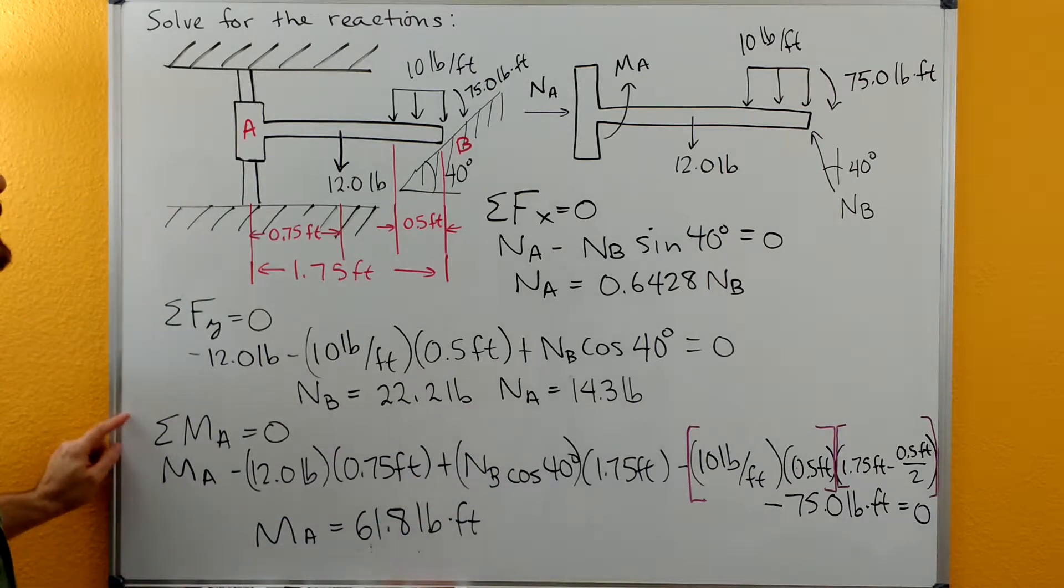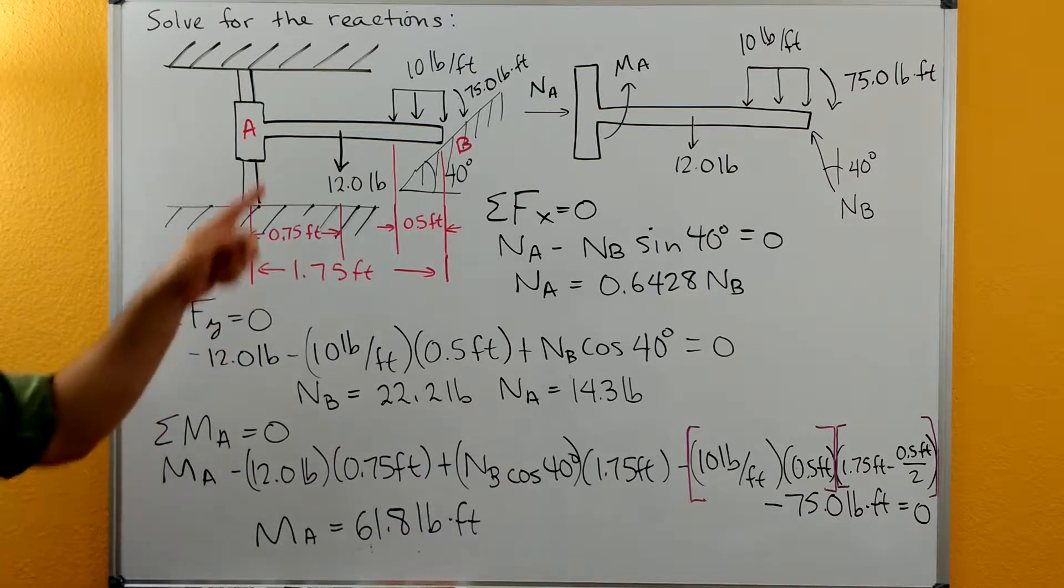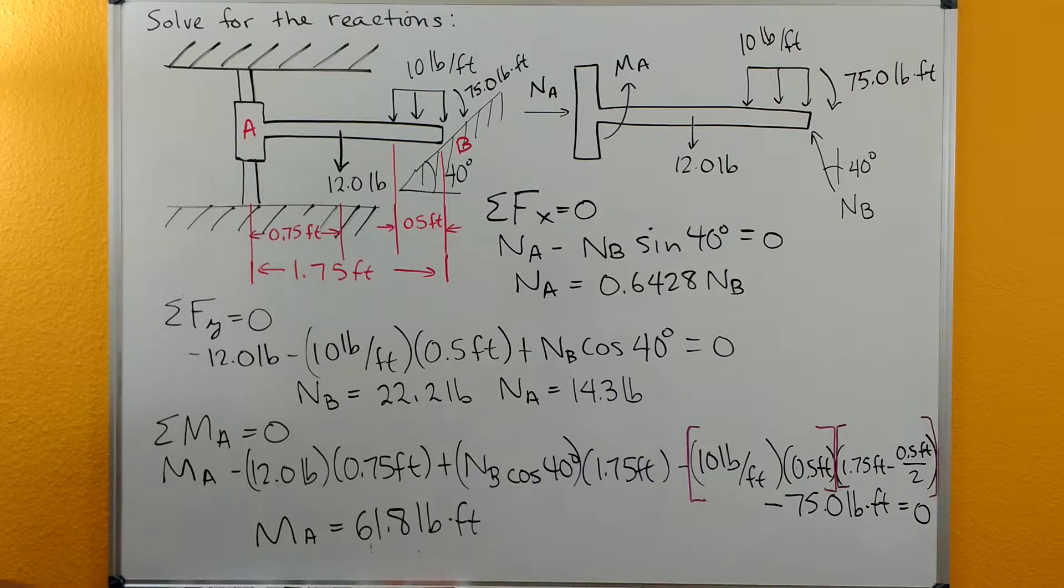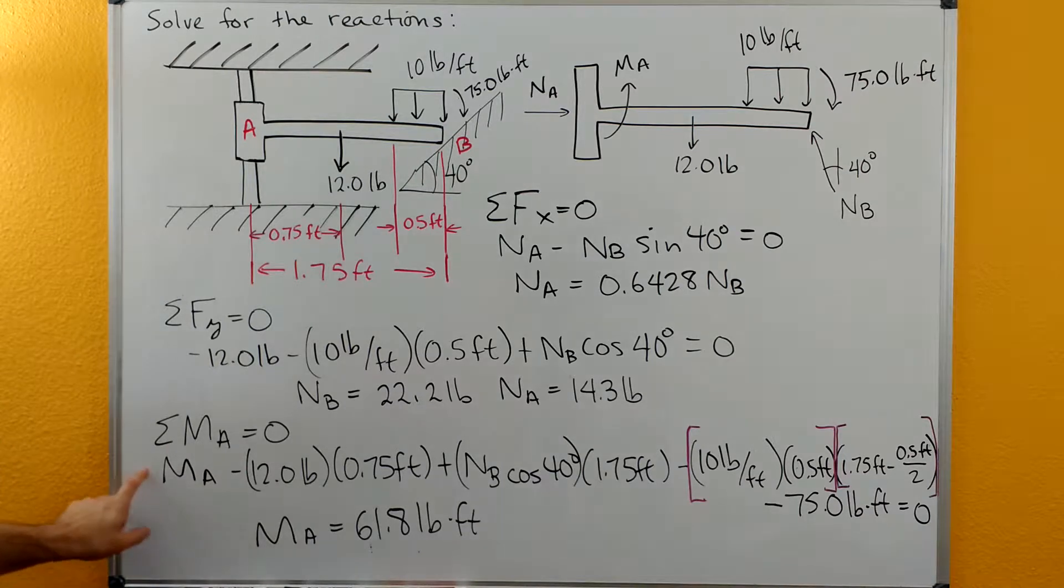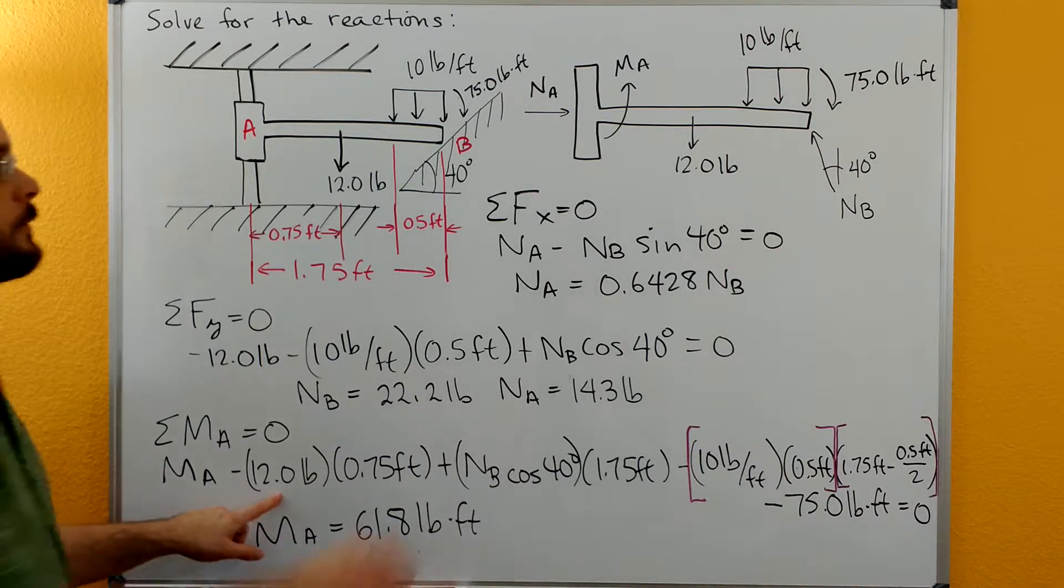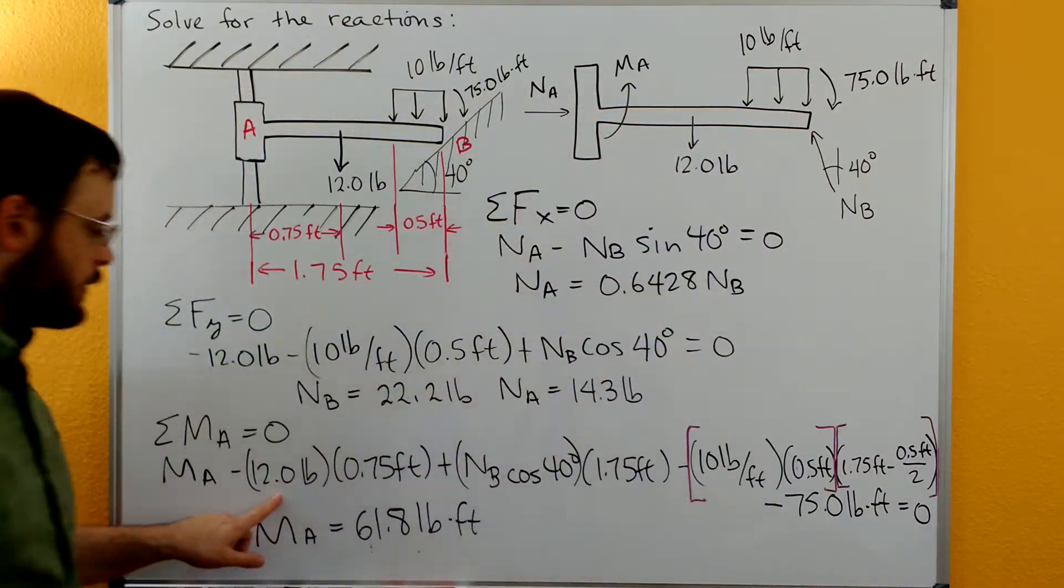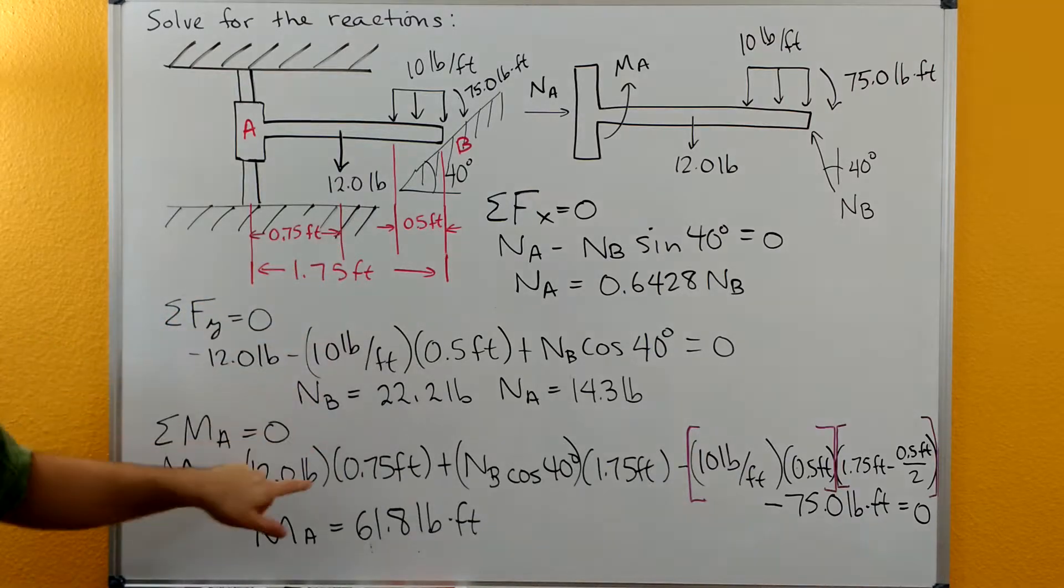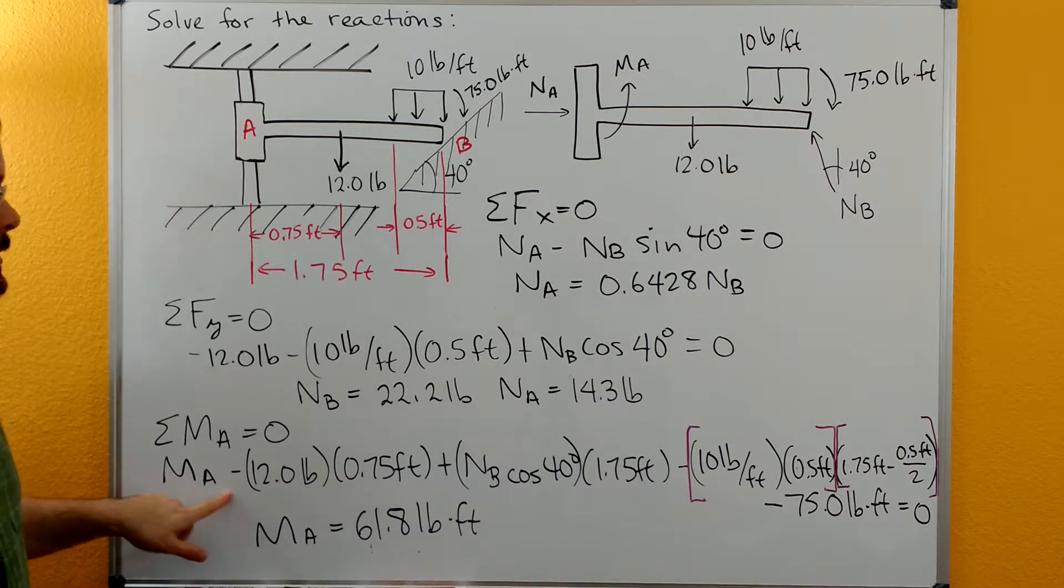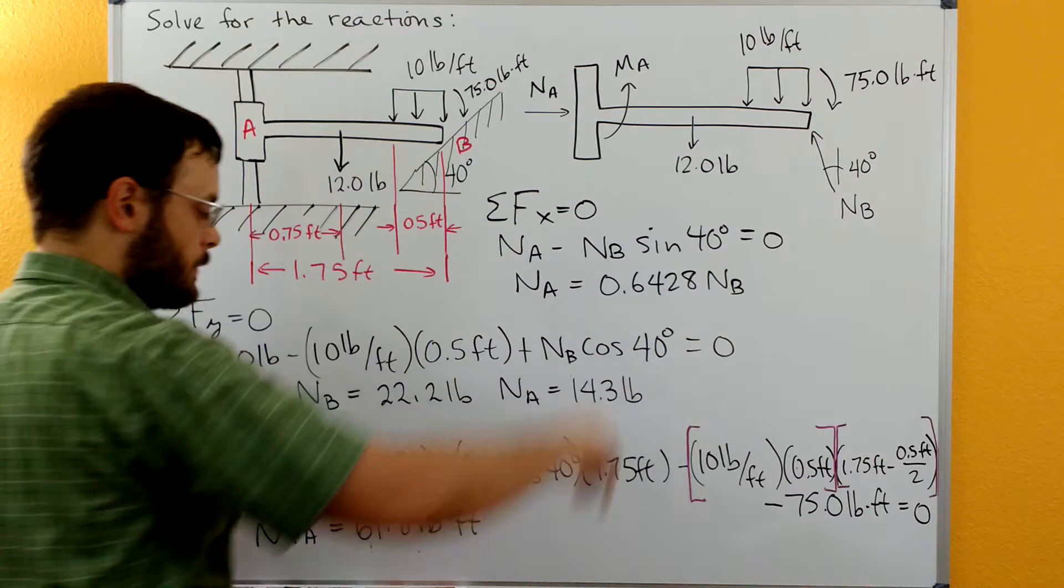Then we just need to do our sum of the moments about A so that we can solve for that reaction moment at A. We have our M_A. We drew it in the positive or counterclockwise direction, so it has a positive contribution. Then we have our 12 pound times our 0.75 feet. That is from A, and that's going to be a negative contribution here to the moment.